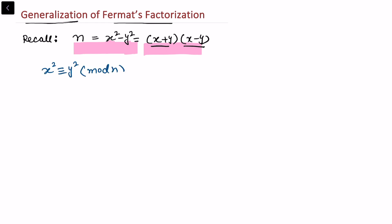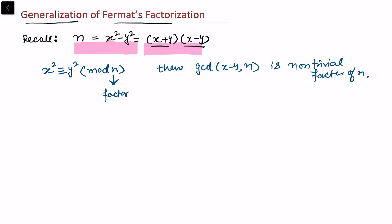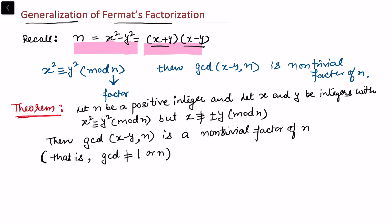We want to extend this to find a factor for a particular integer n using modular arithmetic. If we can find some x and y such that x squared is congruent to y squared modulo n, then we can find a factor of n. Specifically, the gcd of (x minus y) and n is a non-trivial factor of n. Let us write in detail what this theorem says and how this non-trivial factor arises under certain conditions.